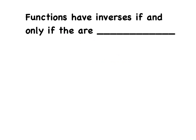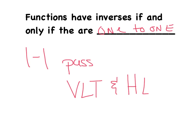Functions have inverses if and only if they are one to one. What does that mean? A one to one function has to pass both the vertical line test and horizontal line test. It has to pass both.